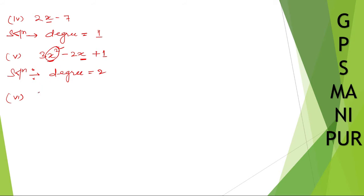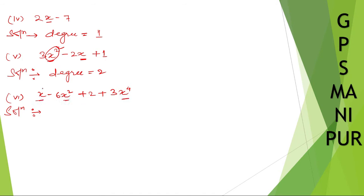Roman number 6: x minus 6x squared plus 2 plus 3x to the power 4. So what is the degree here? If you look very carefully, there are three variable terms: the powers are 1, 2, and 4. So 4 is the highest one. Degree is equal to 4.